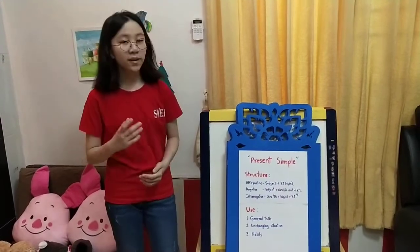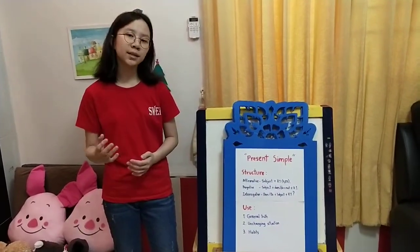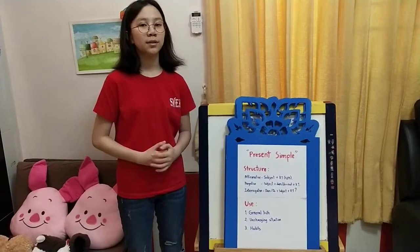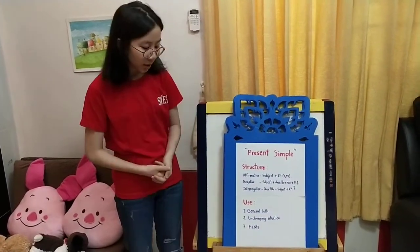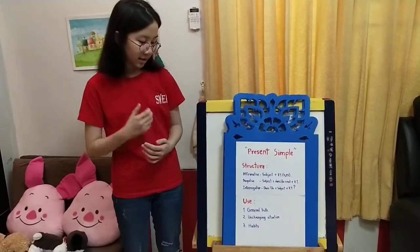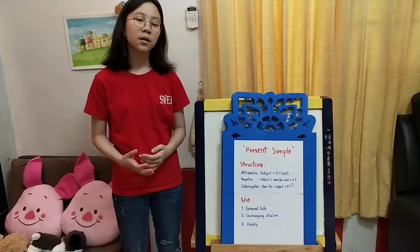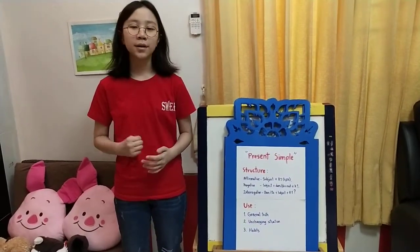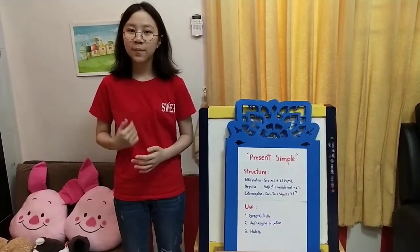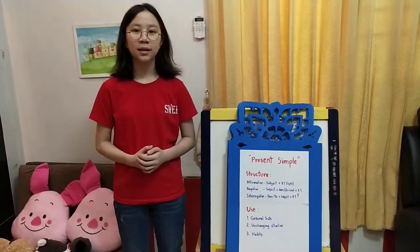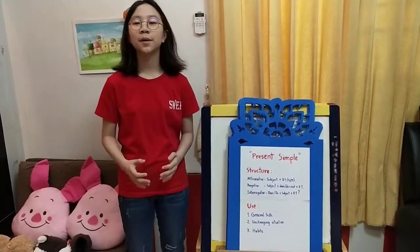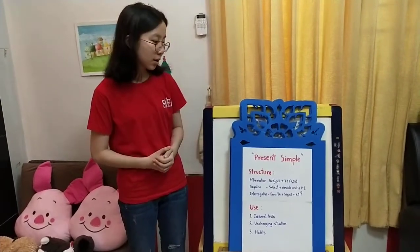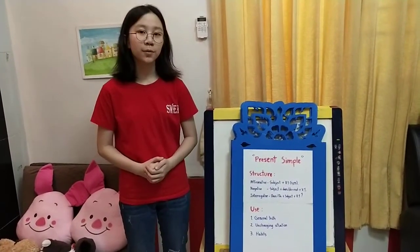The uses of present simple. First, we use it for general truth — for example, 'The earth revolves around the sun.' Second, we use it for an unchanging situation — for example, 'I live in Thailand.' Third, habits — my habits or your habits. For me, I drink milk every day. This is my habit, so I use present simple.